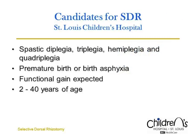Candidates for dorsal rhizotomy procedures are those who have spastic diplegia, triplegia, hemiplegia, or quadriplegia secondary to premature birth or birth asphyxia. All should have potential for functional gain from dorsal rhizotomy. The optimal age is two to five years, but older children and young adults can also benefit from dorsal rhizotomy.